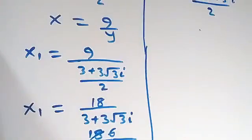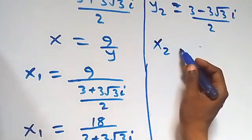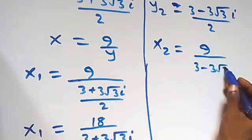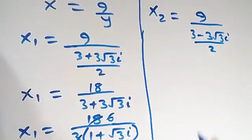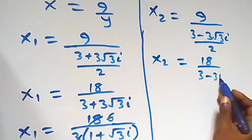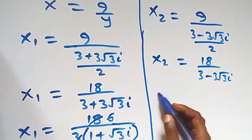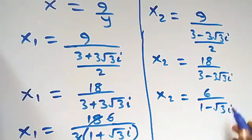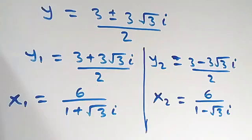Similarly, x₂ = 9 / y₂ = 9 / [(3 − 3√3·i) / 2] = 18 / (3 − 3√3·i). So we have two sets of complex solutions: (x₁, y₁) and (x₂, y₂), both of which are complex solutions.